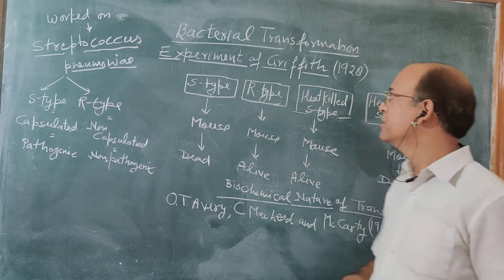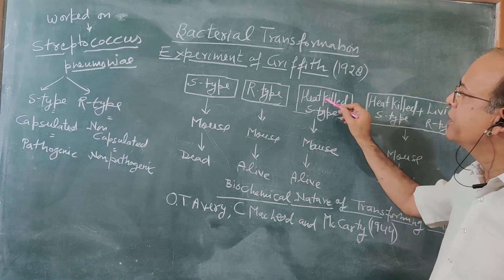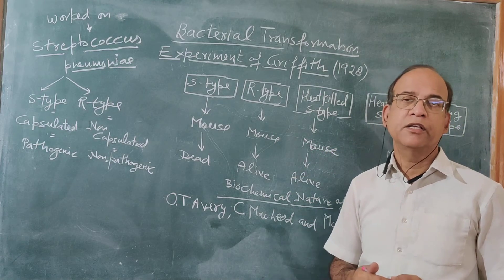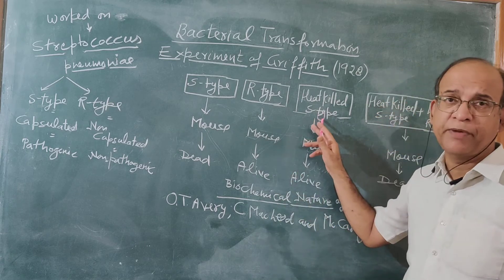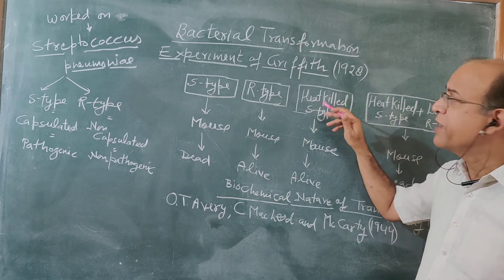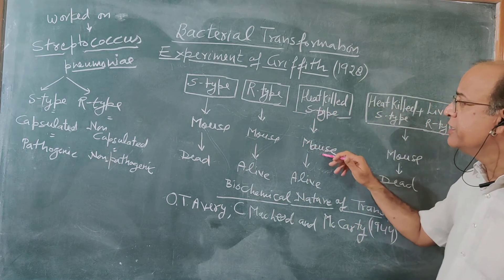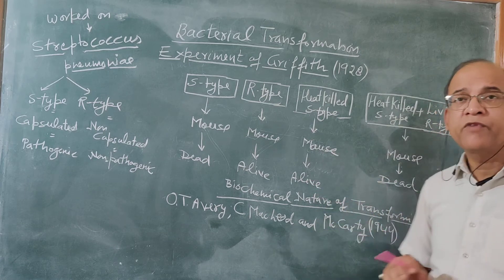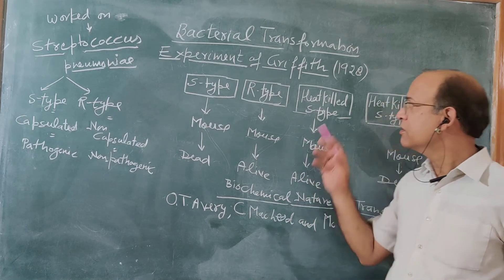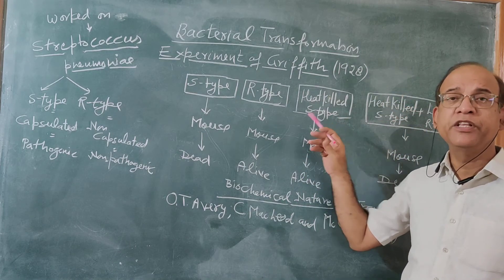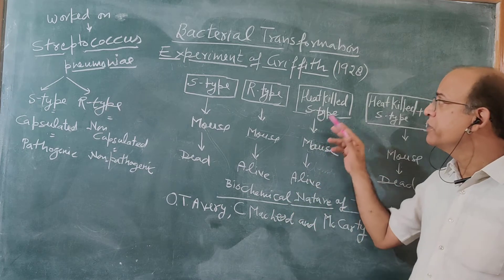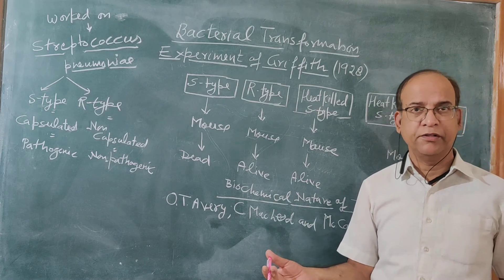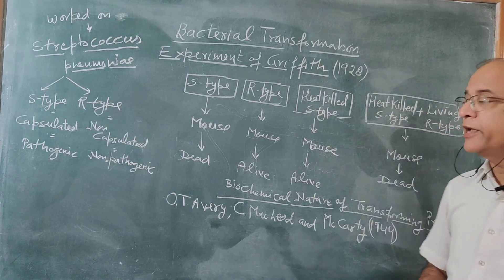In another experiment, Griffith heat-killed S-type bacteria — meaning at high temperature he killed the S-type bacteria. S-type bacteria is pathogenic, but when the bacteria was heat-killed and injected in the mouse, then the mouse remained alive. It means there was no disease. So this S-type bacteria, which is pathogenic, because it is heat-killed, was not able to cause disease, and the mouse remained alive.